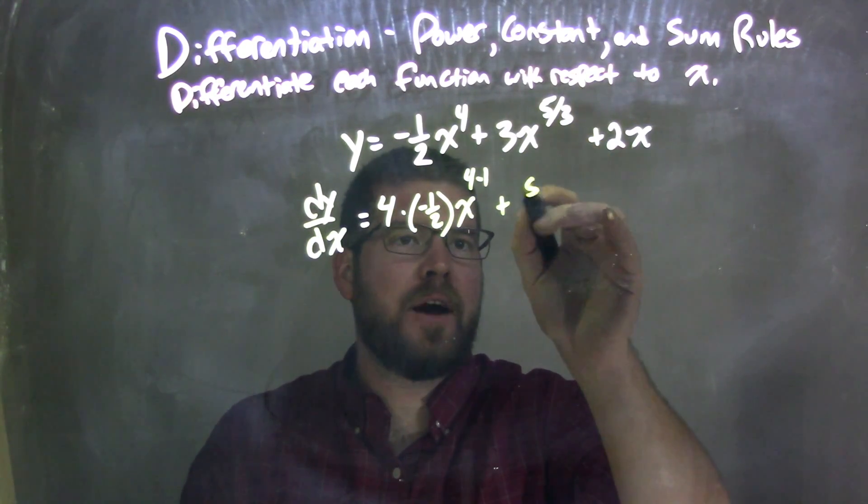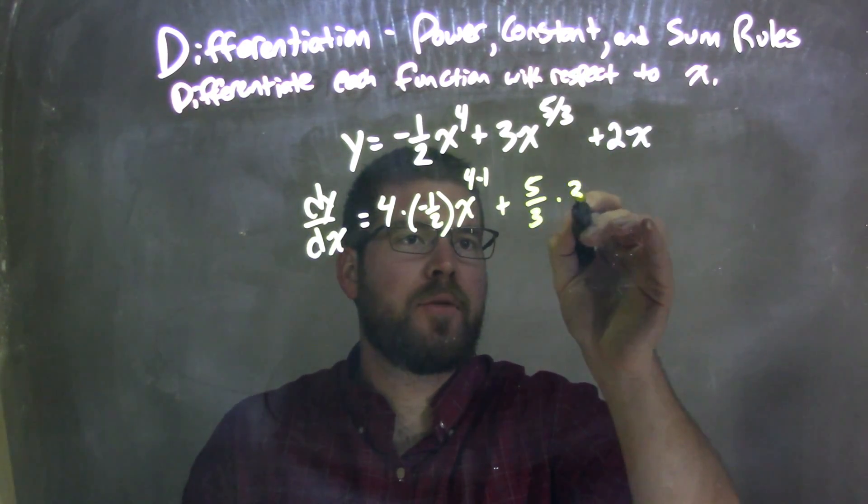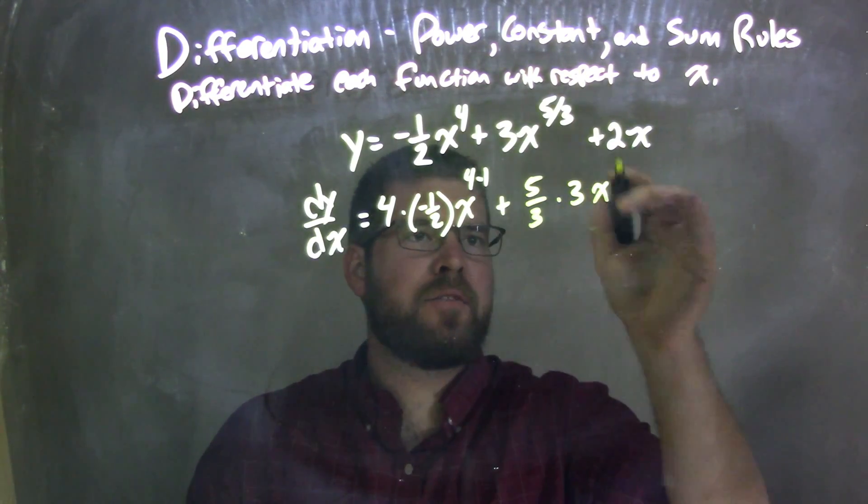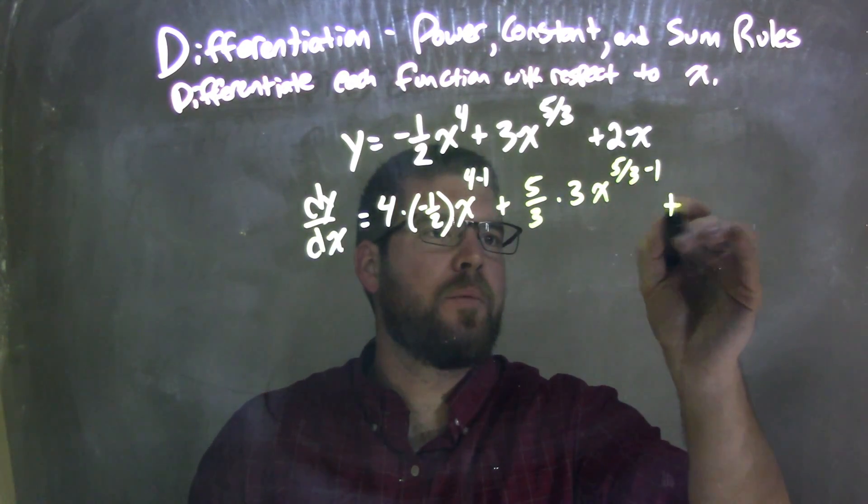Plus five-thirds, next part, same thing, power rule applies, five-thirds comes out front, times 3x to, this is going to be five-thirds minus 1.